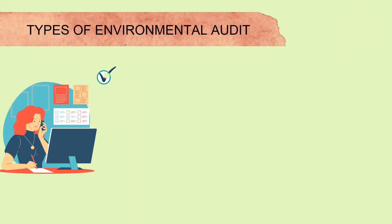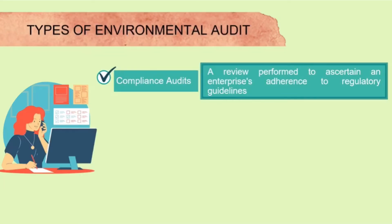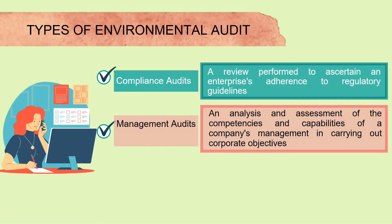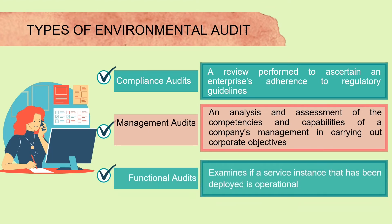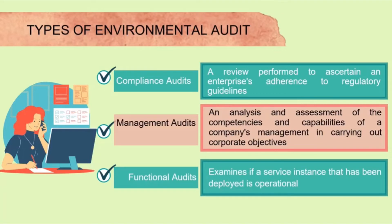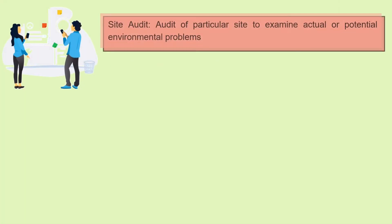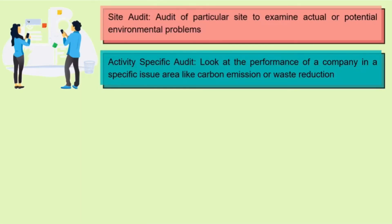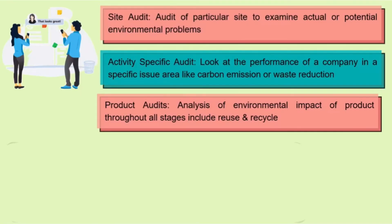There are three types of environmental audit. First is the compliance audit: a review performed to ascertain an enterprise's adherence to regulatory guidelines. Second is the management audit: an analysis and assessment of the competencies and capabilities of a company's management in carrying out corporate objectives. Third is the functional audit: examines if a service instance that has been deployed is operational. Additionally, a site audit examines actual or potential environmental problems at a particular site. Activity-specific audit looks at a company's performance in a specific area like carbon emission or waste reduction. And product audit analyzes the environmental impact of a product throughout all stages, including reuse and recycle.